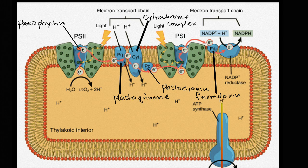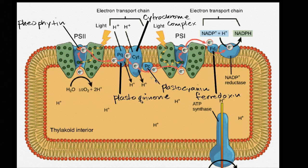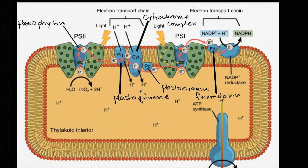And then it can then transfer the electron to plastoquinone, and that plastoquinone is interacting in this cytochrome complex, which transfers the electron from plastoquinone to plastocyanin. And as it's doing it, you see the hydrogen ions being transferred from the outside of the thylakoid to the inside of the thylakoid, which is exactly what we've been talking about.